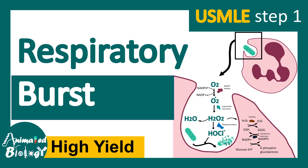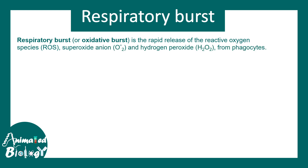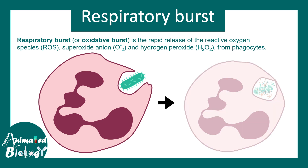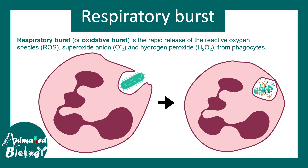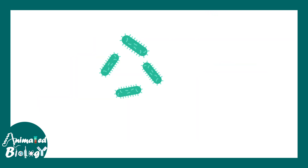In this video we'll talk about the respiratory burst, a high yield topic for USMLE Step 1. Respiratory burst, or oxidative burst, is a rapid release of reactive oxygen species, superoxide ions, and things like hydrogen peroxide from phagocytes. Imagine a neutrophil engulfing a bacteria — after engulfing the bacteria inside the phagosome, there would be a rapid release of reactive oxygen species. ROS helps to eliminate the pathogen.